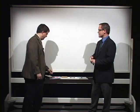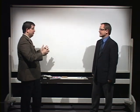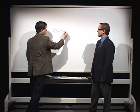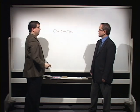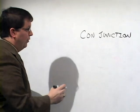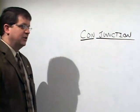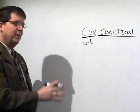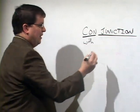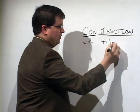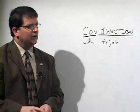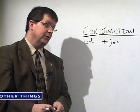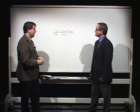Next would be conjunctions. This is a part of speech where the word itself helps identify what it is. In the word 'conjunction' you see the prefix 'con,' meaning 'with,' and 'junction,' which carries the idea of joining. So when you are using a conjunction, you are joining one thing with another. There are actually three different types of conjunctions: coordinating conjunctions, subordinating conjunctions, and correlative conjunctions.